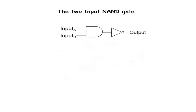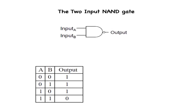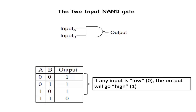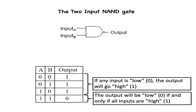A variation on the idea of the AND gate is called the NAND gate. The word NAND is a verbal contraction of the words NOT AND. Essentially, a NAND gate behaves the same as an AND gate with a NOT (inverter) gate connected to the output terminal. To symbolize this output signal inversion, the NAND gate symbol has a bubble on the output line. The truth table for a NAND gate is exactly opposite to that of an AND gate. As with AND gates, NAND gates are made with more than two inputs. The output will be low (0) if and only if all inputs are high (1). If any input is low (0), the output will go high (1).